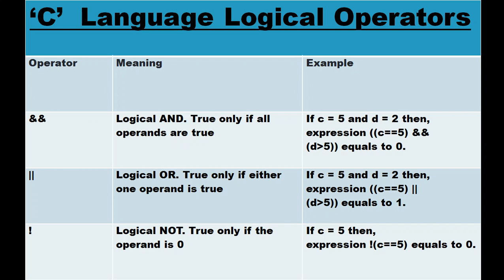Logical AND (&&): true only if all operands are true. The answer is one only if all conditions are true; if even one operand is false, the answer is zero. For example, if c equals 5 and d equals 2, the expression (c == 5) && (d > 5) — c == 5 is true, but d > 5 is false, so it will show the answer zero.